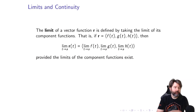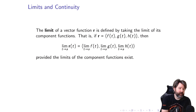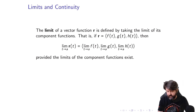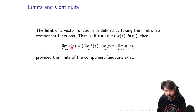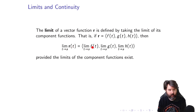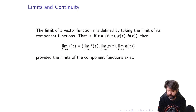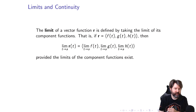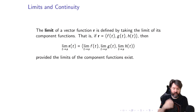Now, limits. Taking a limit of a vector function is as simple as taking the limit of all its components. We define the limit as T approaches A of R of T to be the vector whose components are the limits of F, G, and H at A — as long as those limits all three exist, then that limit exists.